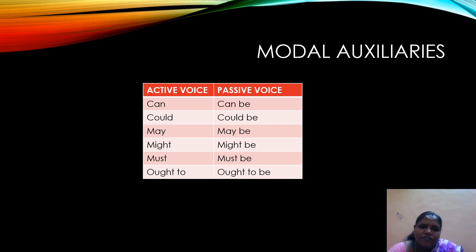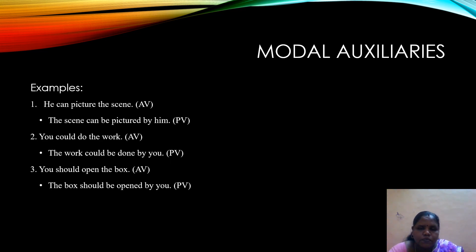While using modal auxiliaries, we will have to add 'be' after the modal. If we have 'can,' it becomes 'can be.' 'Could' becomes 'could be.' 'May' becomes 'may be.' 'Might' becomes 'might be.' 'Must' becomes 'must be.' 'Ought to' becomes 'ought to be.' For example, 'He can picture the scene' becomes 'The scene can be pictured by him.' 'You could do the work' becomes 'The work could be done by you.' Even with modal auxiliaries, we use verb 3 in the passive form after adding 'be.'